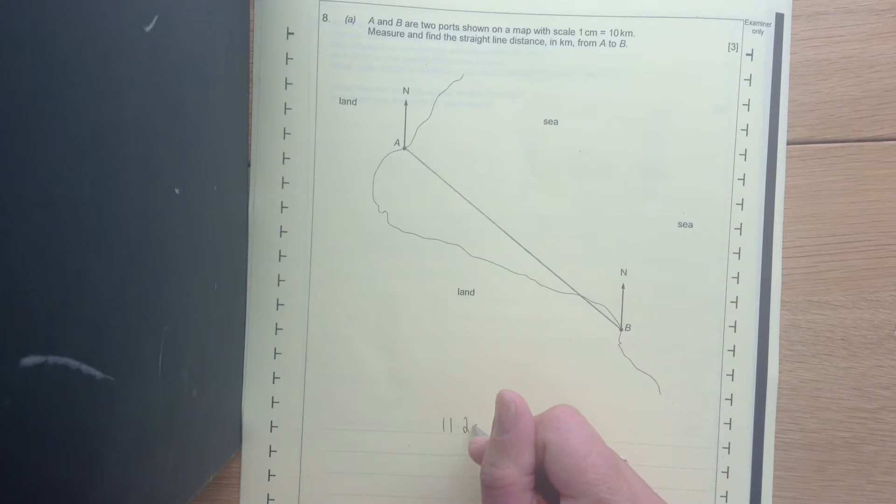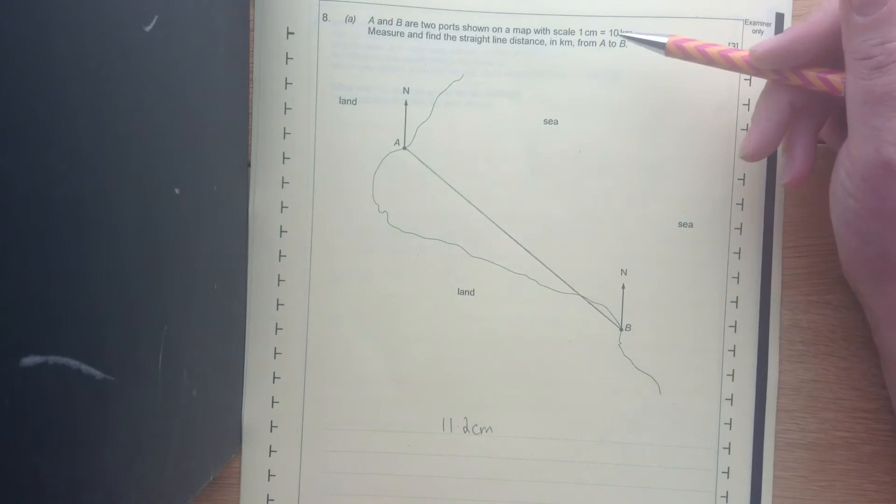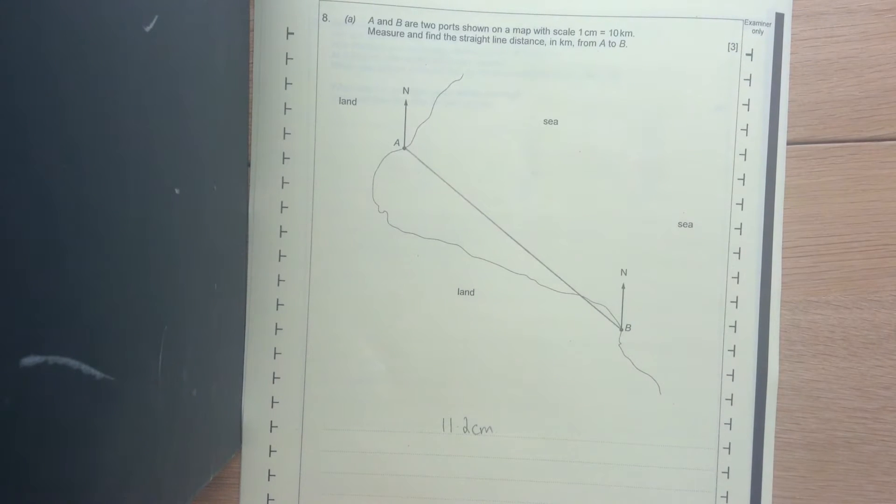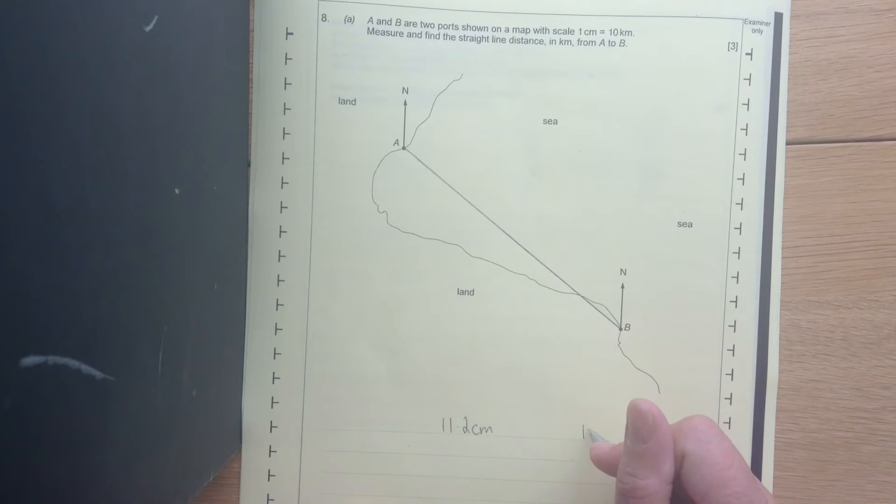I can see that that's 11.2cm. Now, it says that every 1cm equals 10km. So we need to times that by 10 in order to find the number of kilometres. That's going to equal 112km.